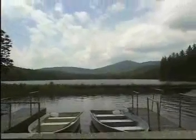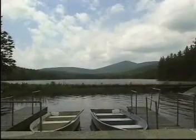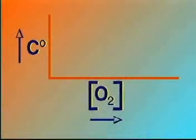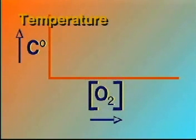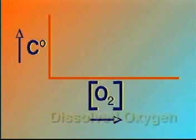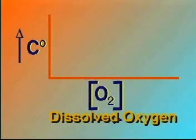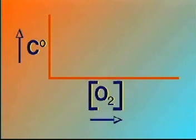Warm bodies of water, such as this lake, hold less dissolved oxygen than cold ones. For their survival, these trout need to live in cold water that holds more dissolved oxygen. This graph shows the relationship between temperature in degrees centigrade on the left axis and the concentration of dissolved oxygen in the water on the bottom axis. As the temperature increases, the solubility of dissolved oxygen decreases.